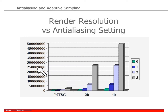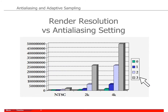This shows the number of samples being cast and seen for these sub-pixels at a given resolution. So NTSC is pretty much very low. If you have 0 or up to 3, you could see that it will slightly increase. The actual impact will not be so important compared to 2K and 4K.